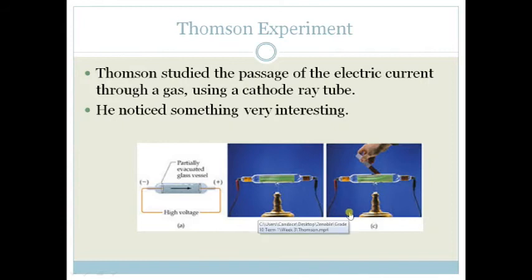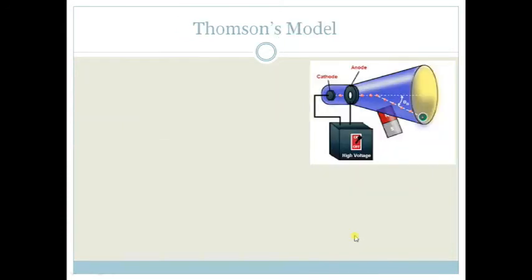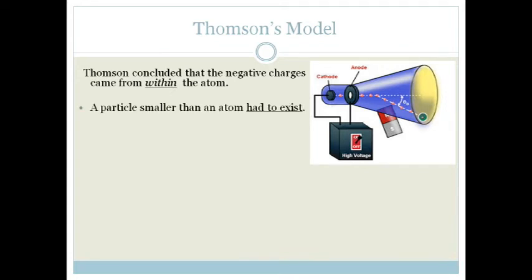All right, so now let's summarize what Thompson's model was, what he found. He concluded that the negative charges come from within the atom. Therefore, there had to be a smaller particle than the actual atom. So therefore, the atom was divisible.